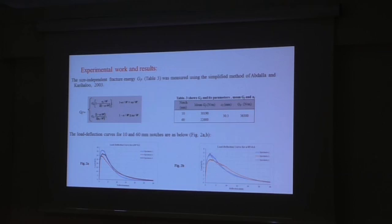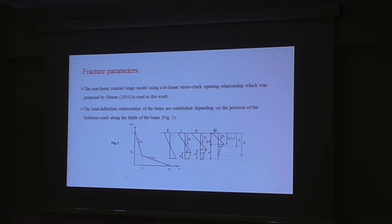The size-independent fracture energy, GF, in Mix 2 was measured using the simplified method of Acker et al. 2003 as shown here in Table 3. The load deflection curves for notch-to-depth ratio as you can see in Table 3. The fictitious crack hinge model was used and the bilinear softening relationship, which was proposed in 2001, is used in this work. And the load deflection relationships are established depending upon the position of the fictitious crack and the depth of the beam.